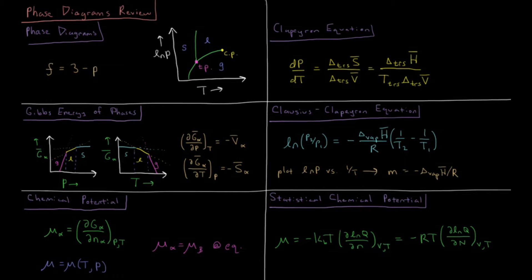This video is a review of the chapter on phase diagrams in chemical thermodynamics. Phase diagrams indicate, as a function of pressure and temperature, what is the equilibrium or lowest Gibbs energy phase for a given substance.